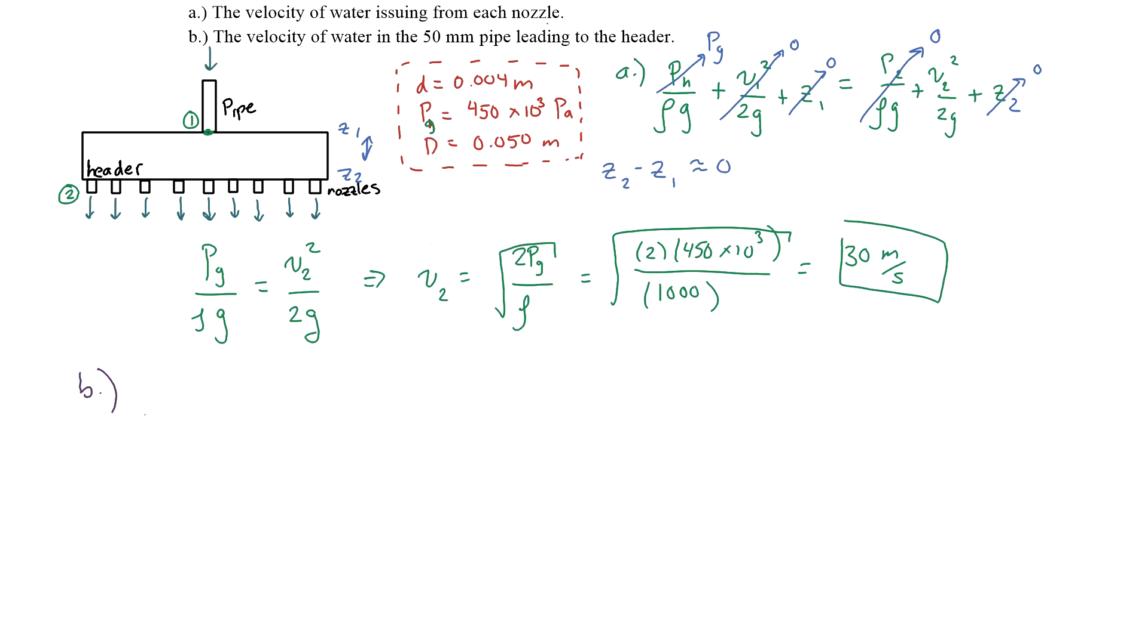For part B, to find the velocity of the water in the 50 millimeter pipe, what we can do is simply apply the concept of continuity. So we could say that the flow through, let's say this is point 3, through the pipe has to equal the flow coming out of the nozzles. So the amount of water coming into here, the rate of water coming into here, has to equal the water coming out of all these nozzles. That's the idea of continuity.